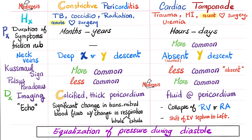Which is more likely to have friction rub? Cardiac tamponade, of course. In constrictive pericarditis the pericardium is very thick and calcified — its two layers will never rub against one another, so friction rub is non-existent. In constrictive pericarditis there is deep X and Y descent on neck vein waveforms. In cardiac tamponade there is no Y descent, because Y descent means emptying of the right atrium into the right ventricle — but it found tons of fluid around the heart and could not empty.